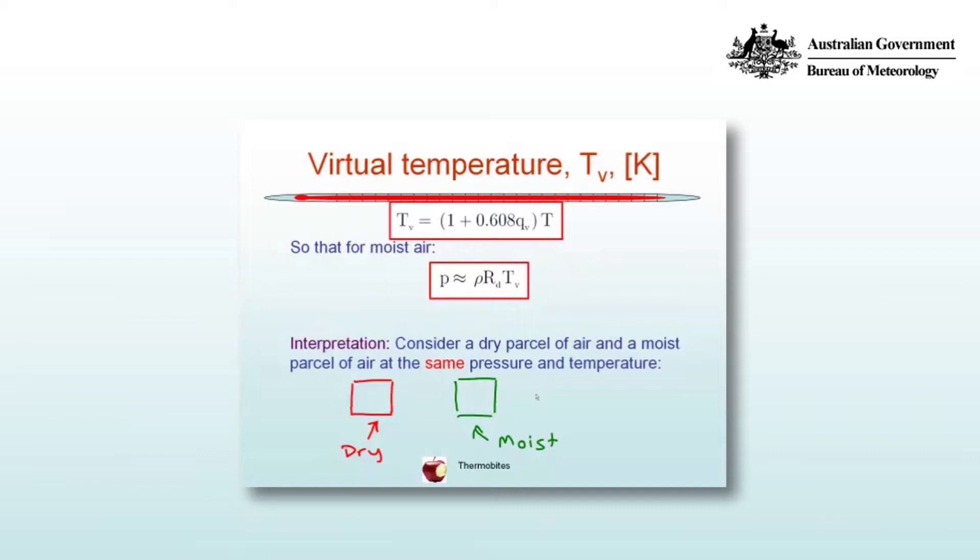So the virtual temperature is a function both of the ordinary temperature and the amount of water vapor as measured by the specific humidity. So that we can write the ideal gas law for moist air as P is approximately equal to rho RD Tv.